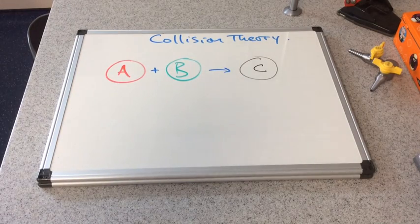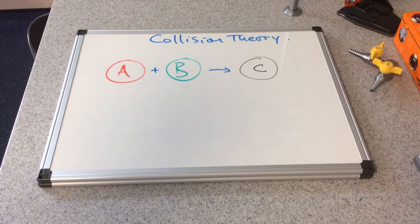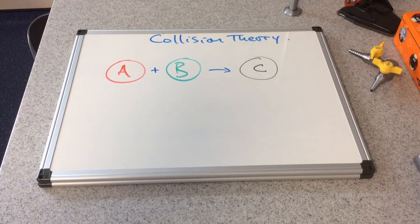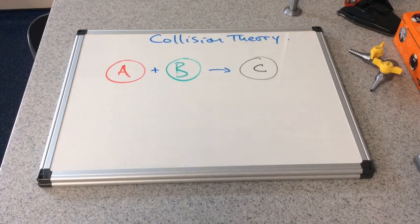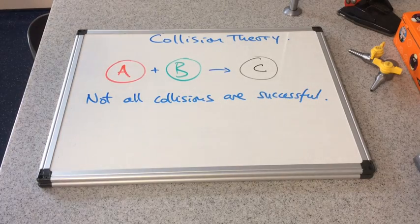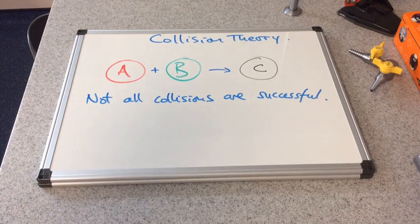We're going to look at something called the collision theory, which is the theory we use in chemistry to explain reaction rates. We've got two reactants: the red A particle reacting with the green B particle, and when they react, they make the black particle called C. For the reaction to occur, the particles need to collide with each other — A and B need to crash into each other. Not every collision is successful; not every collision leads to a reaction. When the rate of a chemical reaction is high, there are a large number of successful collisions per second — that per second brings in the idea of rate.